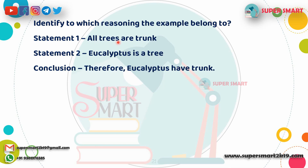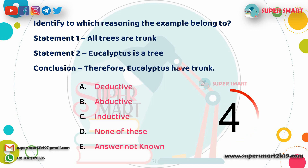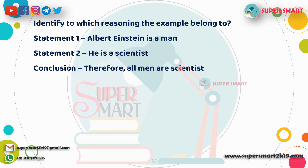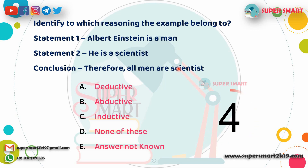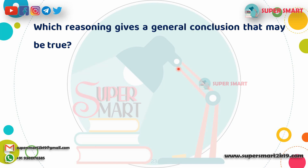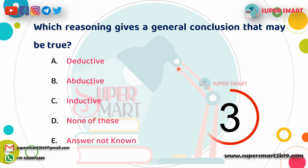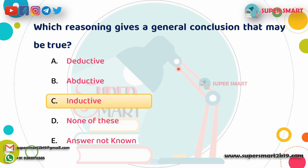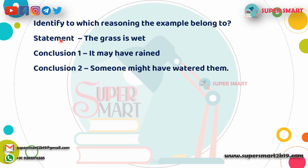Next question: All trees have trunks. Eucalyptus is a tree. Therefore, eucalyptus has a trunk. Answer: Deductive reasoning. Next: Albert Einstein is a man; he is a scientist; therefore all men are scientists. Answer: Inductive reasoning. Next: Which reasoning gives a general conclusion that may be true? The grass is wet — conclusion: it may have rained, or someone might have watered it. Answer: Abductive reasoning.